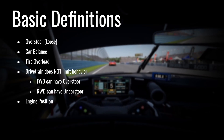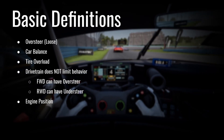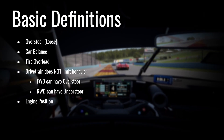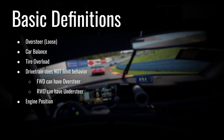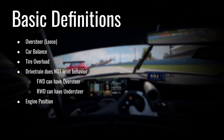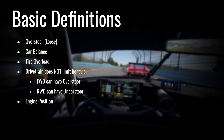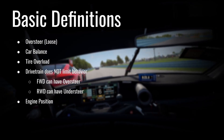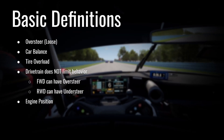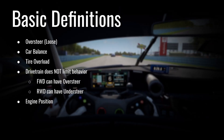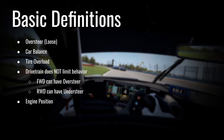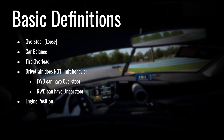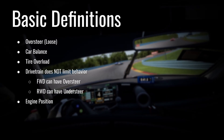One misconception many people have is that drivetrain determines whether you have oversteer or understeer — that's not true. Front-wheel-drive cars can have oversteer, and rear-wheel-drive cars can have understeer, which is the inverse of oversteer. Just because you have a front-wheel-drive car doesn't mean this doesn't apply to you. In fact, you could argue it applies more, because when you have oversteer in a front-wheel-drive car, you have far fewer inputs available to correct it. We will use front-wheel-drive cars for some examples.